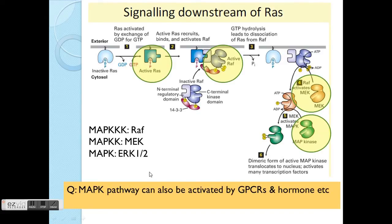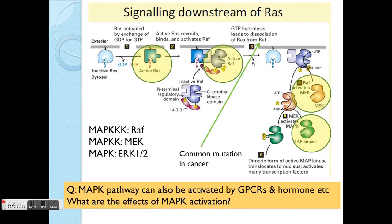The MAPK pathway is not only activated by tyrosine kinase receptors — it can also be activated by GPCRs and hormones. One of the common mutations found in cancer involves RAS. In cancer, these signals are mainly related to cell proliferation. Once mutated, they are switched on forever, so the cells just grow and grow and grow.